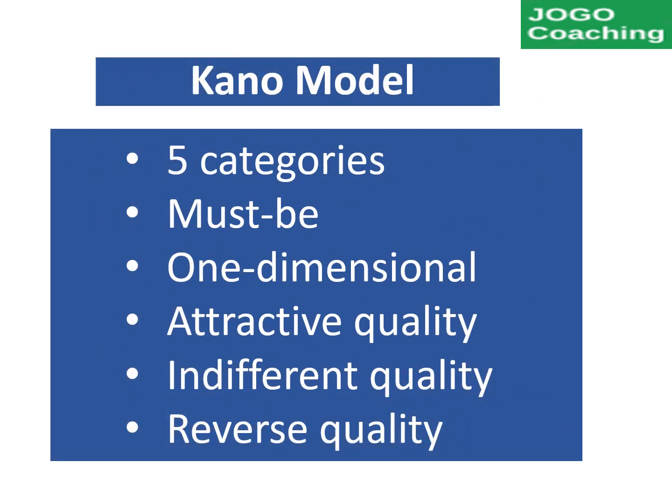The next technique is Kano model prioritization. The prioritization will be done based on the customer's preference of the user stories. Five categories will be assigned to each user story in the backlog. The first category is must-be: the user must be satisfied with this feature. The second category is one-dimensional quality: users are satisfied if the feature is present and dissatisfied if not. The third category is attractive quality: users are happy if the feature is present but won't be dissatisfied if not. The fourth category is indifferent quality: users won't consider a feature either good or bad. The fifth category is reverse quality: users are outright dissatisfied with the feature. This approach is used when many competitors are in the market for the same product.